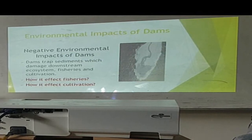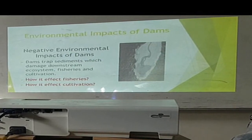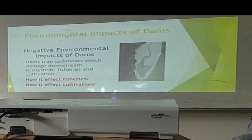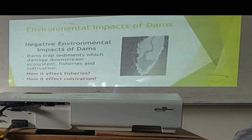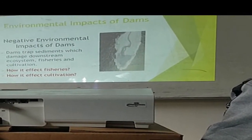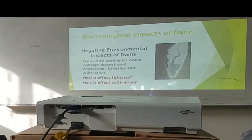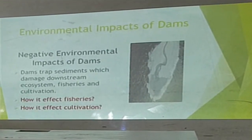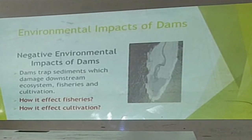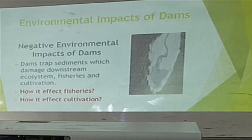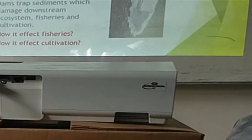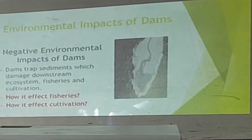The wall of the dam also stops the migration of fish. Now, how does it affect cultivation? We know that during flooding, flood plains are formed, and most places flood plains are suitable for cultivation. After construction of a dam, flood plains will not be formed because dams control floods. It also stops sediment supply, and in this way cultivation is affected.